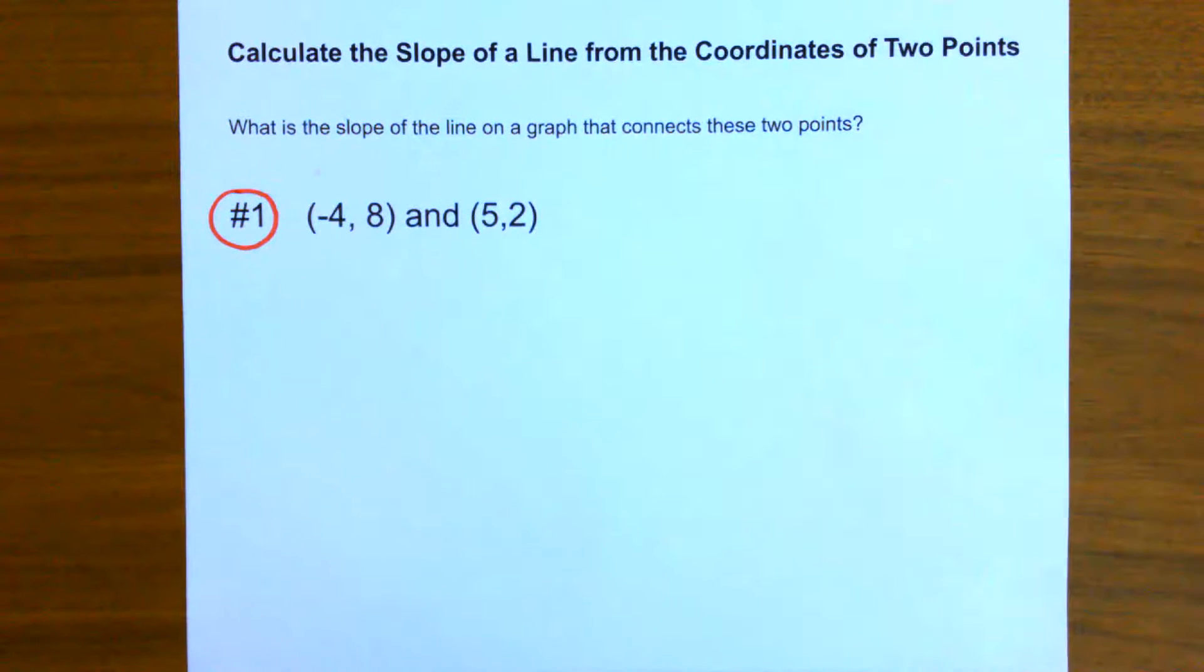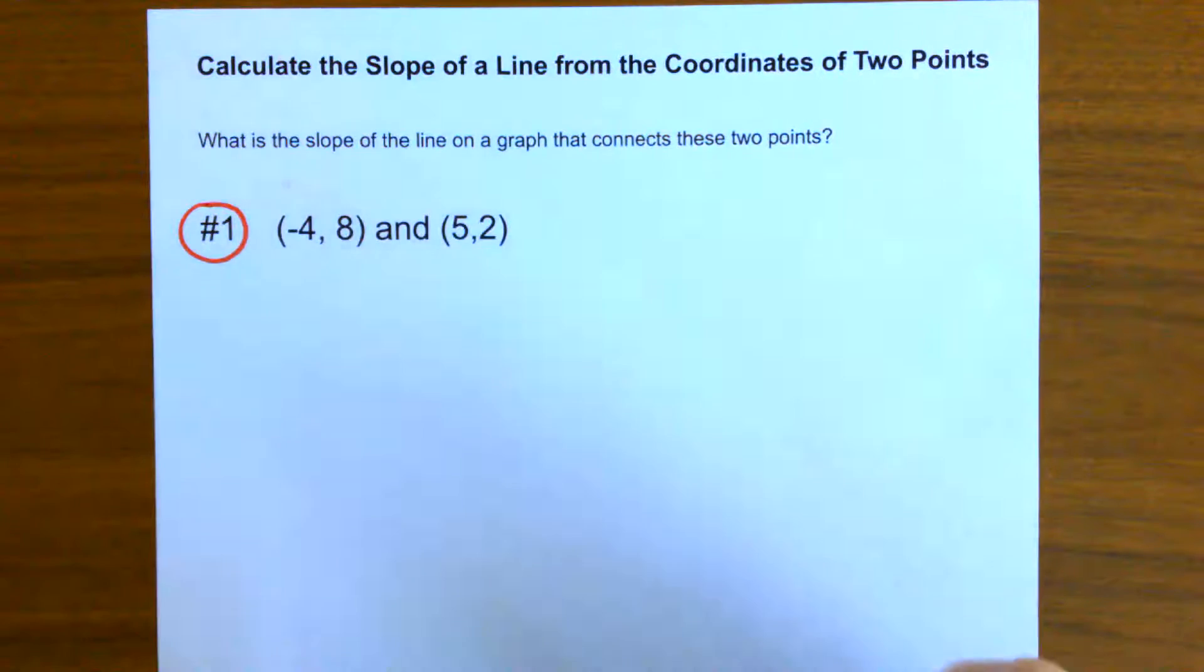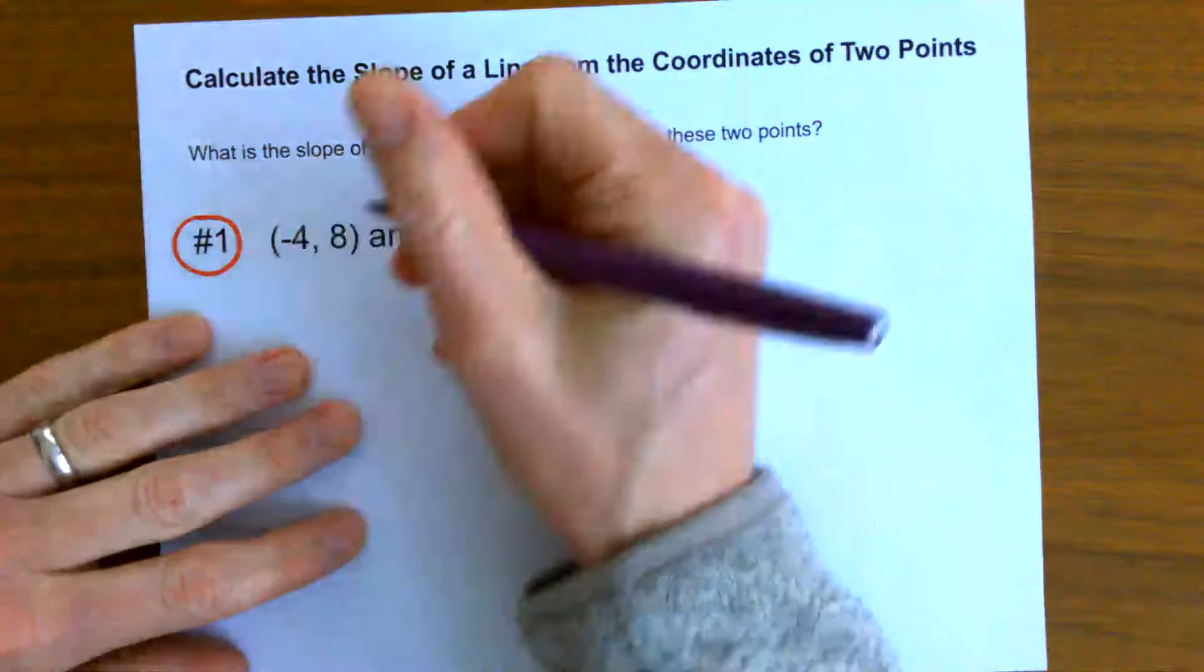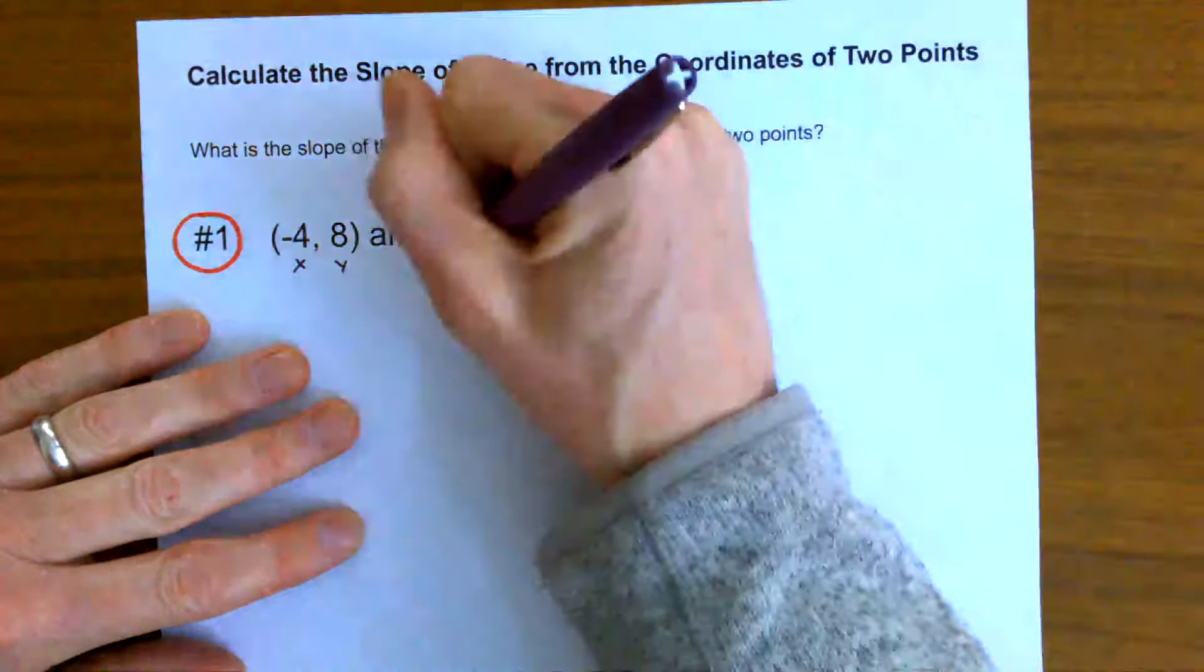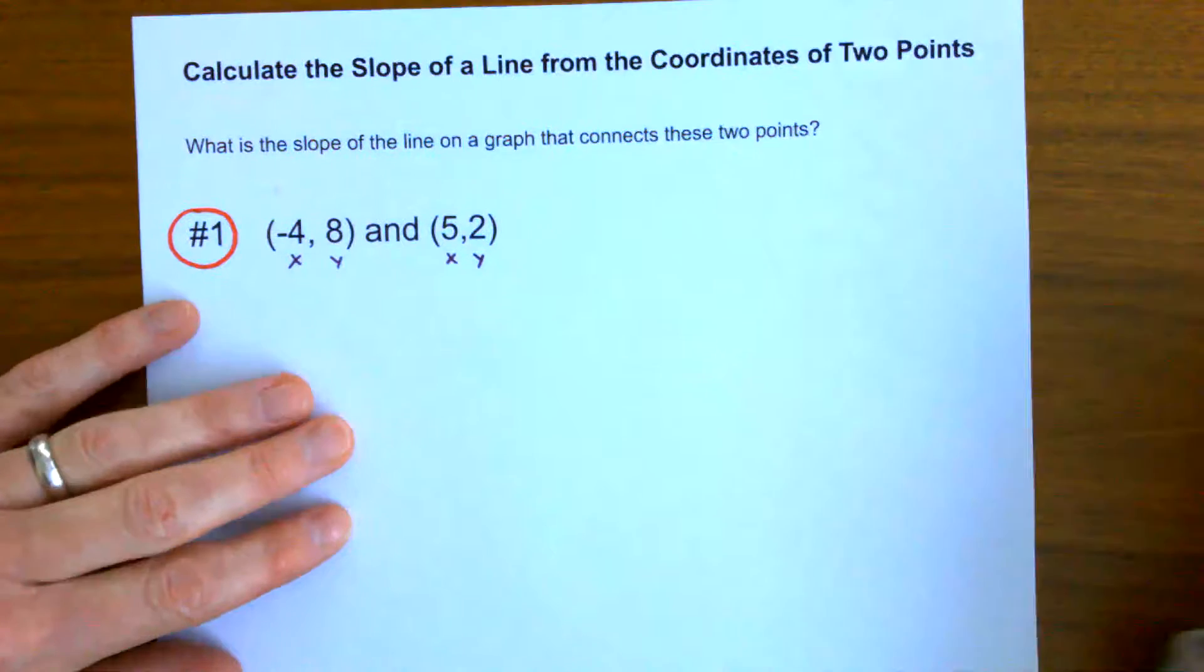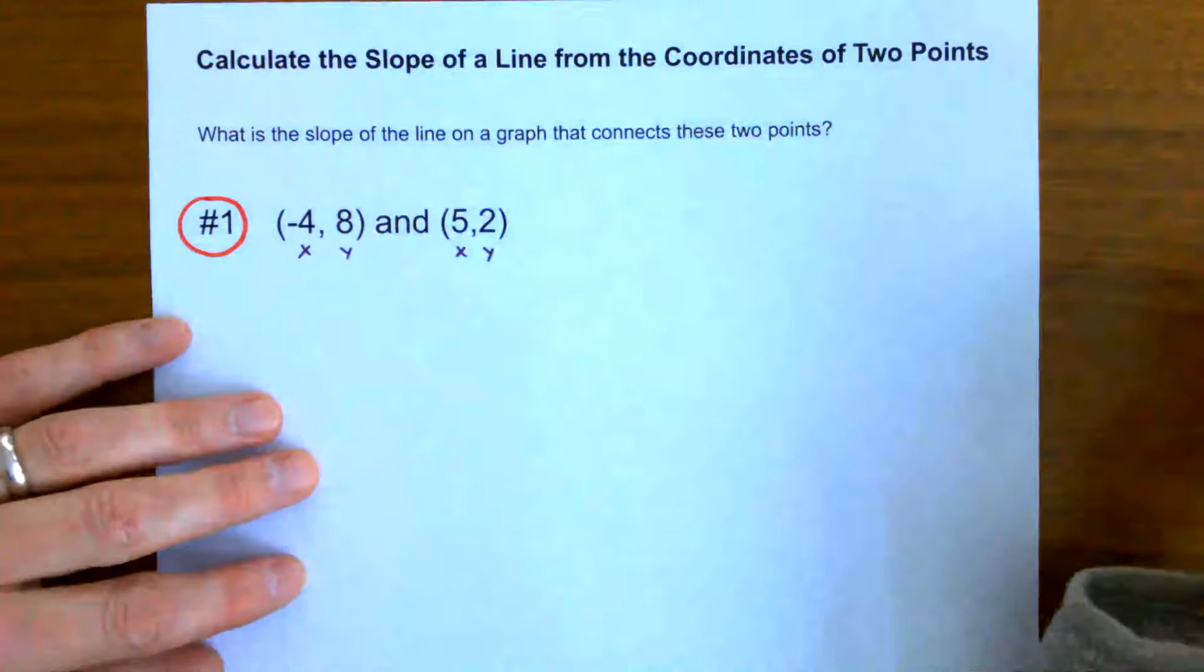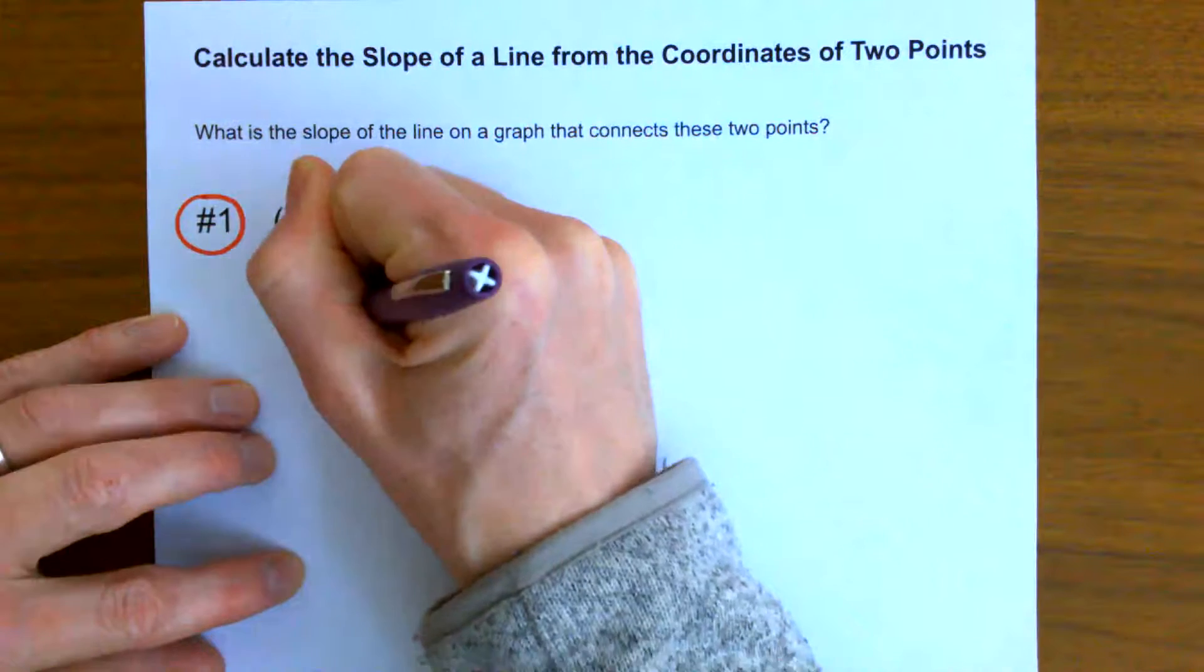So one way I'd like to show you is we can get the slope of the line connecting these two points just by looking at the coordinates. So for this point I can see there is an x coordinate and a y coordinate, and there's an x coordinate and a y coordinate for this point. So one thing I could do is I could make a little data table of x's and y's.